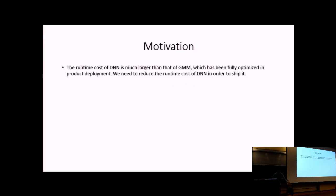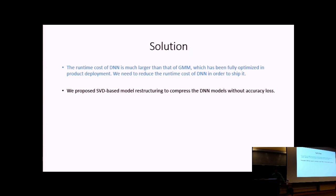The first topic is reducing runtime cost. This was done about five years ago, when we switched our production system from the Gaussian mixture model to deep networks. We found that although the DNN has much better accuracy, the runtime cost is an issue — at that time, the DNN had around 30 million parameters, while our GMM was fully optimized over decades and had far fewer parameters. If users directly deployed the DNN, the accuracy was better but the system was slower, which is not a good user experience. Therefore, we proposed SVD-based model restructuring to compress the DNN without accuracy loss.